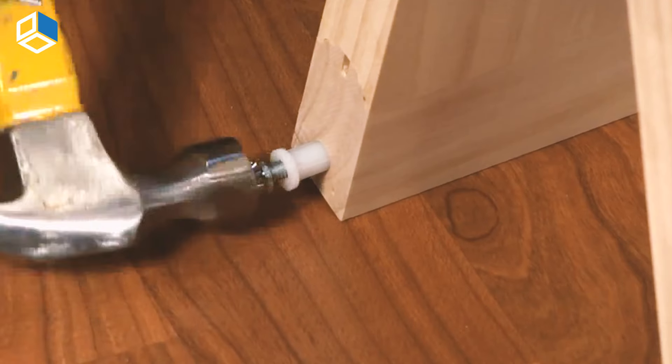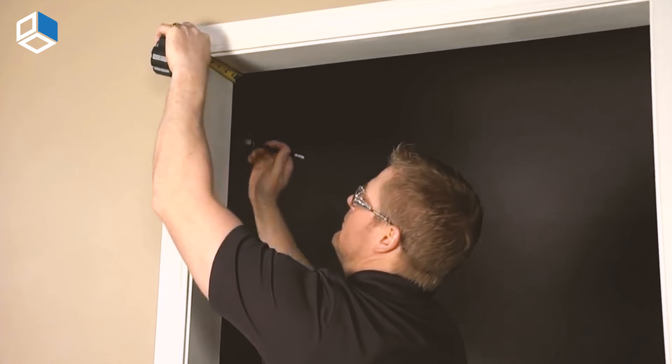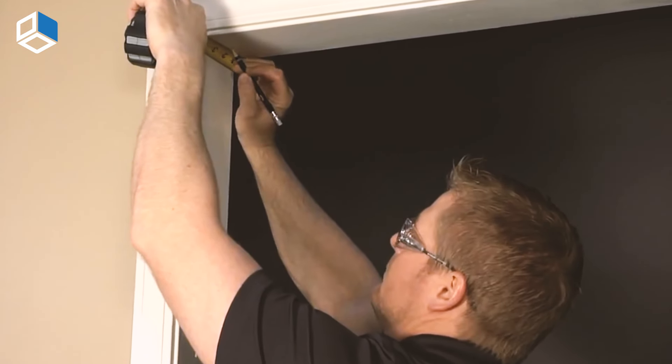Insert the bottom pivot. This should be installed into the hole at the bottom edge of the door that will remain near the jamb side of the opening.